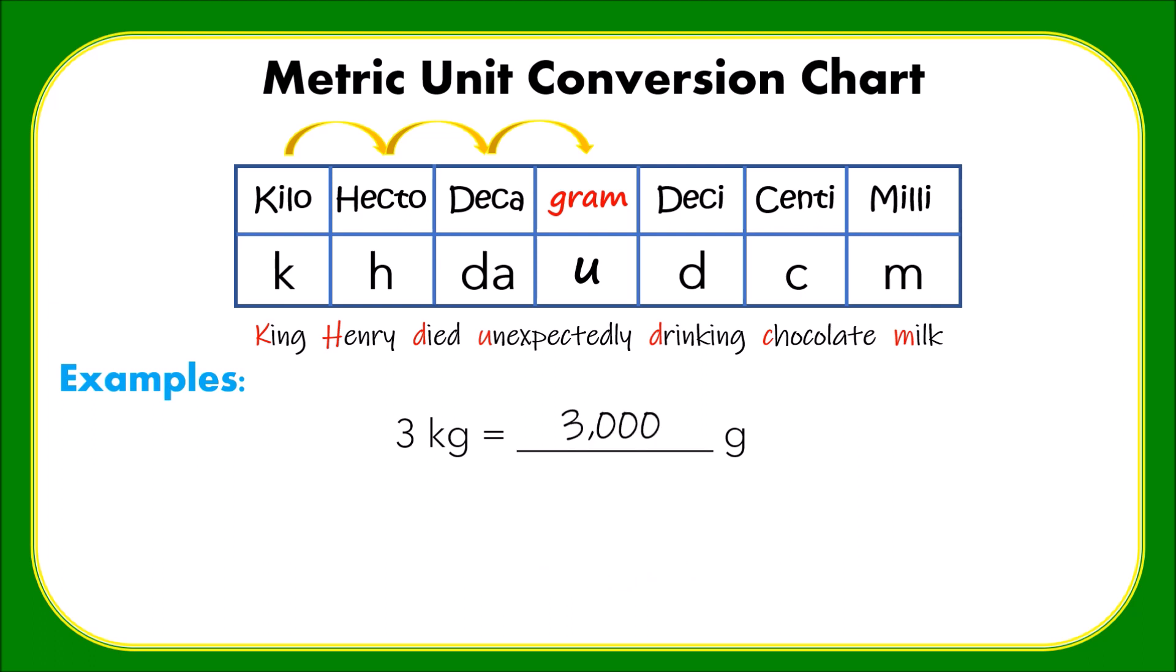Now we can say that there are 3,000 grams in 3 kilograms. Next, how many centimeters are there in 8.1 hectometers? Just like what we did before, we have to know how many places do we need to move our decimal point from hectometer to centimeter.